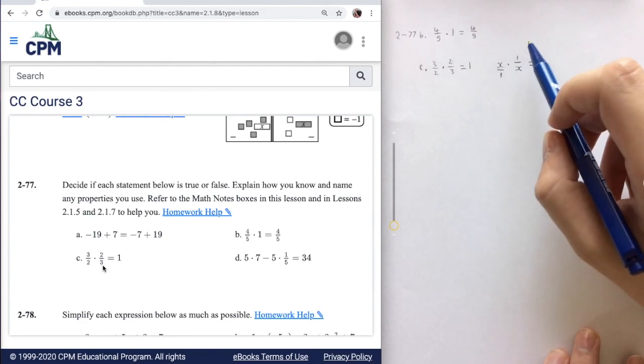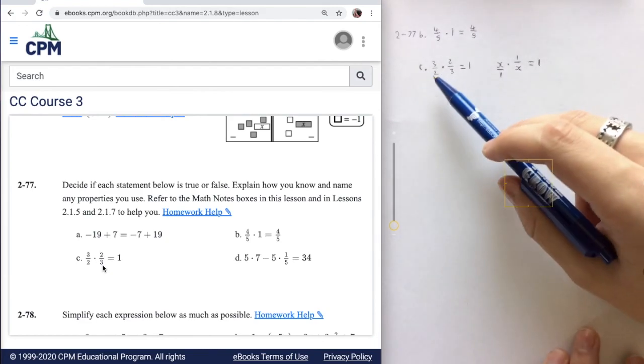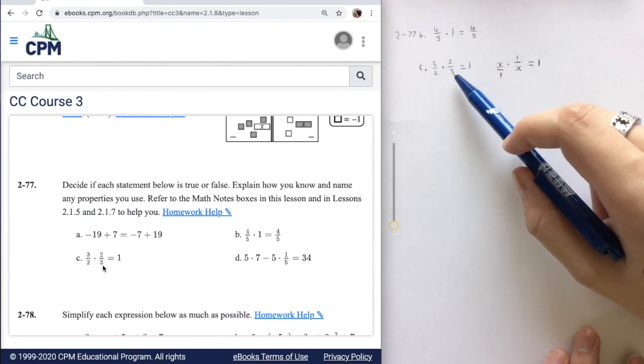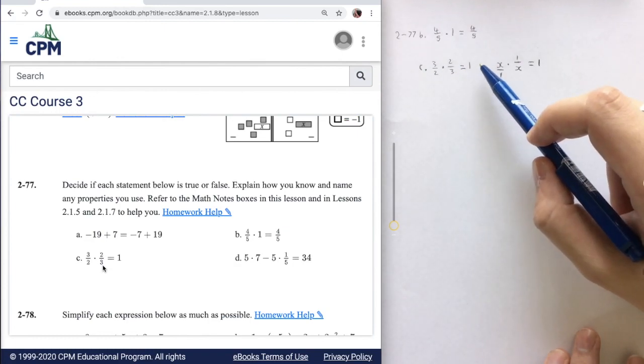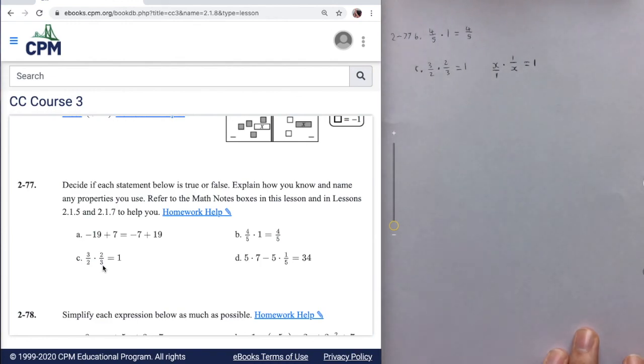The inverse property of multiplication says that when you multiply something by its inverse, you're just going to end up with 1. And so we know that 3 over 2 multiplied by 2 over 3 should equal 1.